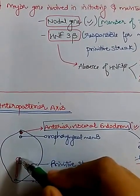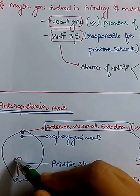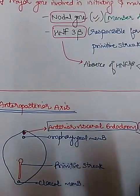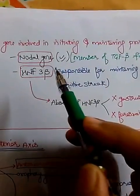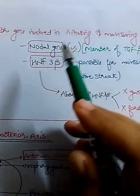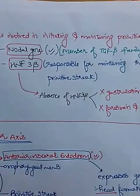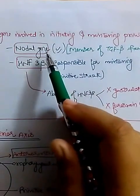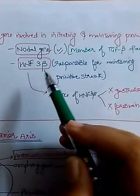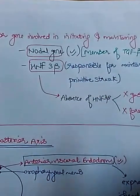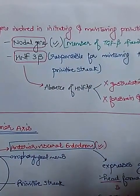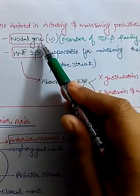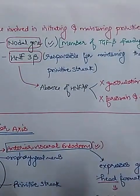A commonly asked exam question is: FGF8 stimulates the nodal cells to increase expression of the nodal gene, which is mainly responsible for initiating and maintaining the primitive streak. So the major gene involved in initiating and maintaining the primitive streak is the nodal gene. For a PGI-type question where options include nodal gene, HNF3-beta, and FGF8, you would mark all of them. But if a single answer is required, you answer nodal gene, as it is the most important gene involved in initiating and maintaining the primitive streak.